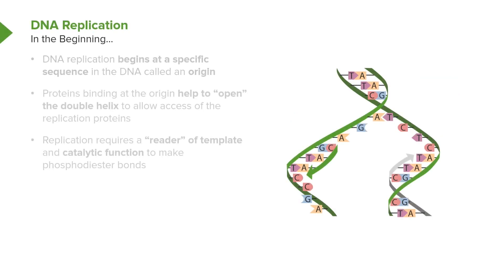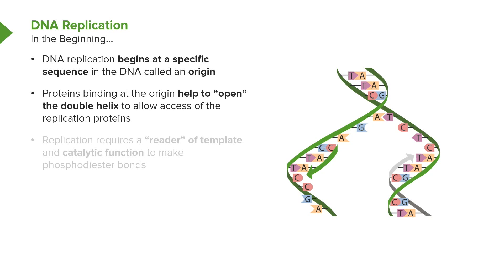When we think about DNA replication, it starts at a specific sequence. We've seen in another lecture how transcription of RNA begins at a promoter. In DNA replication, the replication process begins at a sequence called an origin. Proteins bind to the origin to help the replication process to occur, very much like what we saw in transcription, except here the idea is the replication of DNA.